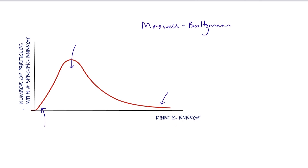The activation energy for a reaction is the minimum amount of energy that two colliding particles must possess in order to react. This barrier — because essentially that's what our activation energy is — is set quite high for the majority of reactions, somewhere between 10 and 100 kilojoules per mole.